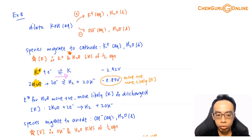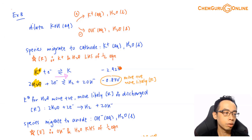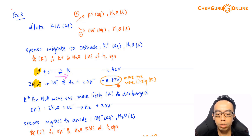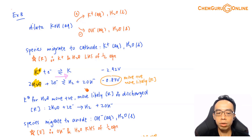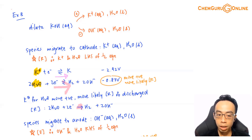Coming back: for reduction of K+, the E value is −2.92V. For reduction of water, E value is −0.83V. Comparing for reduction — the species with the more positive E value is more likely to be reduced. Water has the more positive E value, so water is more likely to be reduced and is discharged at the cathode. We simply copy the water equation in the forward direction: 2H2O + 2e⁻ → H2 + 2OH⁻.